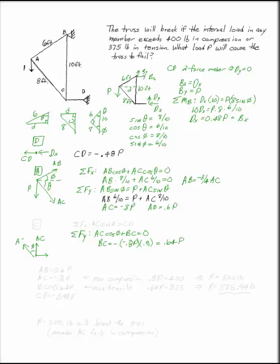So now I know what my various loads are. AB is going to be 0.6P. AC is going to be negative 0.8P. CD is negative 0.48. And BC is 0.64P.